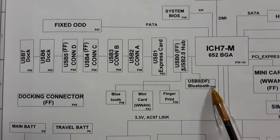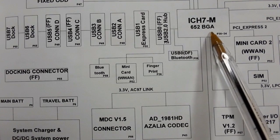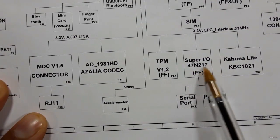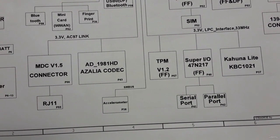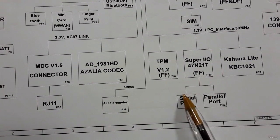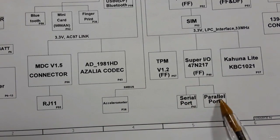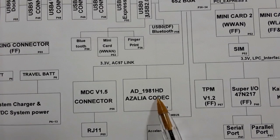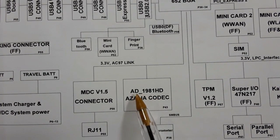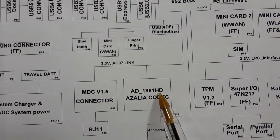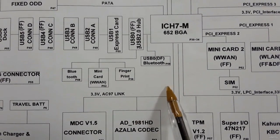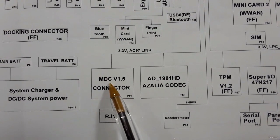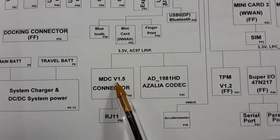The ICH is also connected to Bluetooth, to the super I/O or keyboard controller, and then to the serial port and parallel port. There is also an Azalea codec of type AD1981HD, which is directly connected to the ICH.